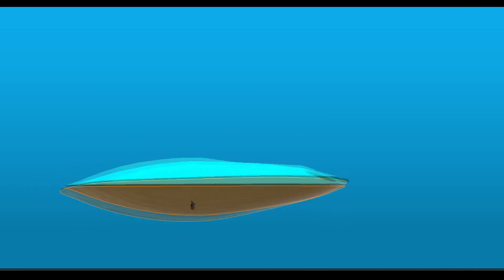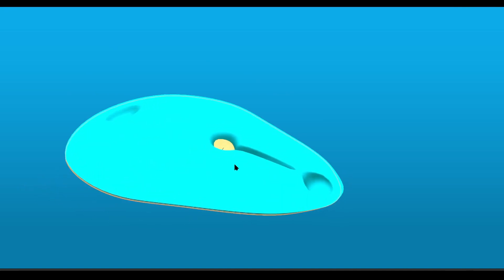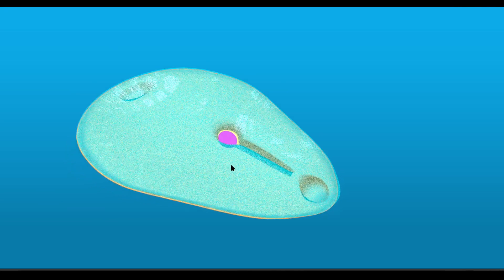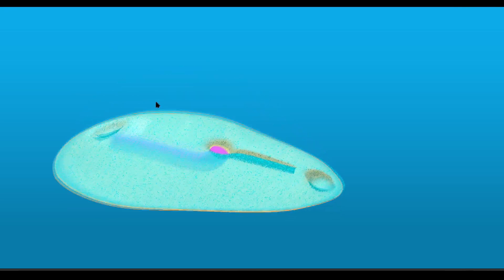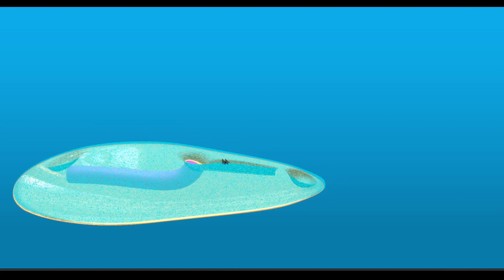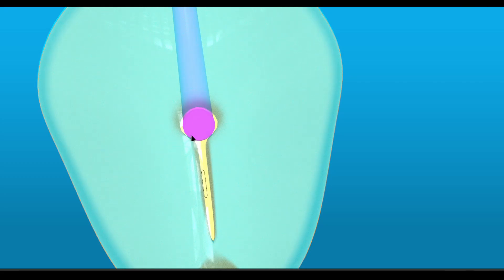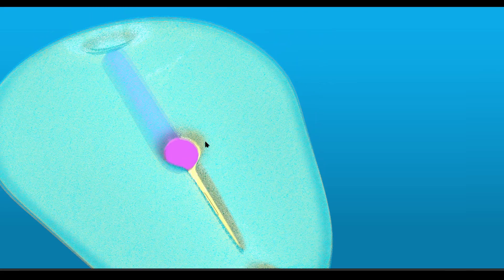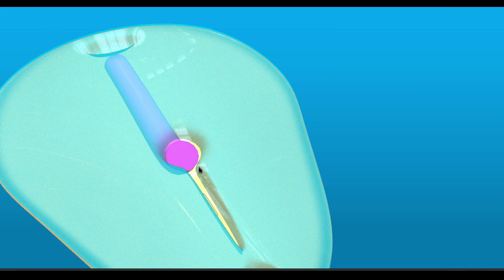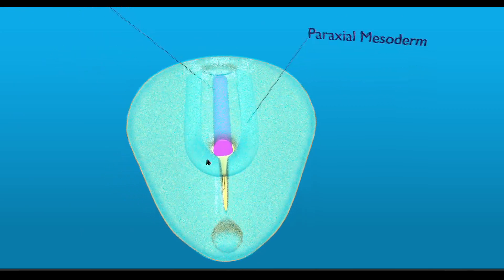Here is the ectoderm, here is the endoderm, the primitive node and primitive streak. Making the endoderm transparent — the first cells that go from the primitive node will form the pre-caudal plate and the notochord. The cells that ingress downward from the cranial most part of the primitive streak and some cordolateral part of the primitive node will form the paraxial mesoderm.